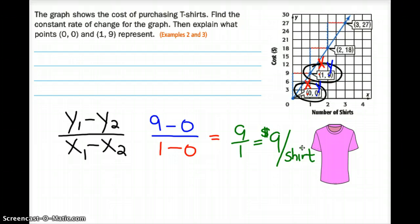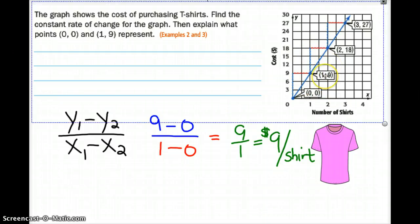That's my unit rate. That's my rate of change. And the question asks, what does (0,0) represent? (0,0) represents that you get 0 shirts for $0. If I were to then look at (1,9), that means I get 1 shirt for $9.